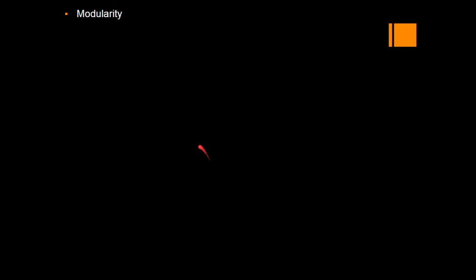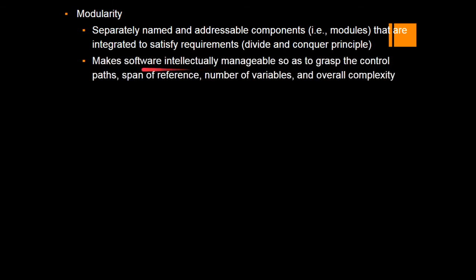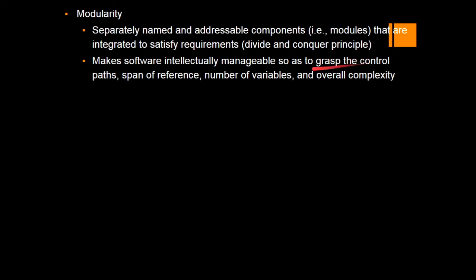Next is modularity. Given a system to be built, systems are always divided into components — this is called the divide and conquer principle. When developing a product, we start with a high-level design and keep refining inner details. We think in modules: an input module, a process module, an output module, a report module, a specification module, a deployment module. A module is a component with a well-defined function, and modularity helps achieve successful development of the product as separately named and addressable components integrated to satisfy requirements.